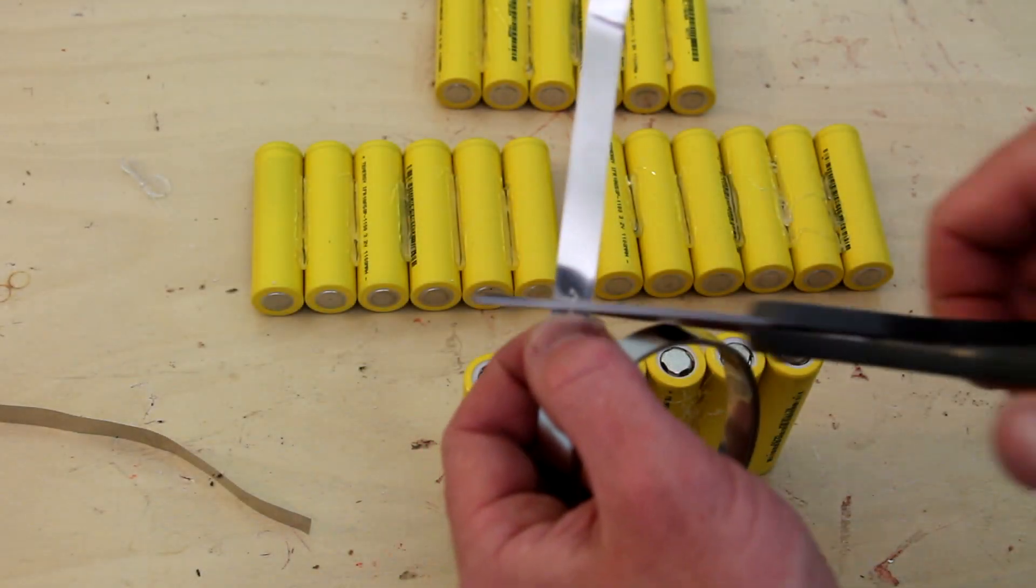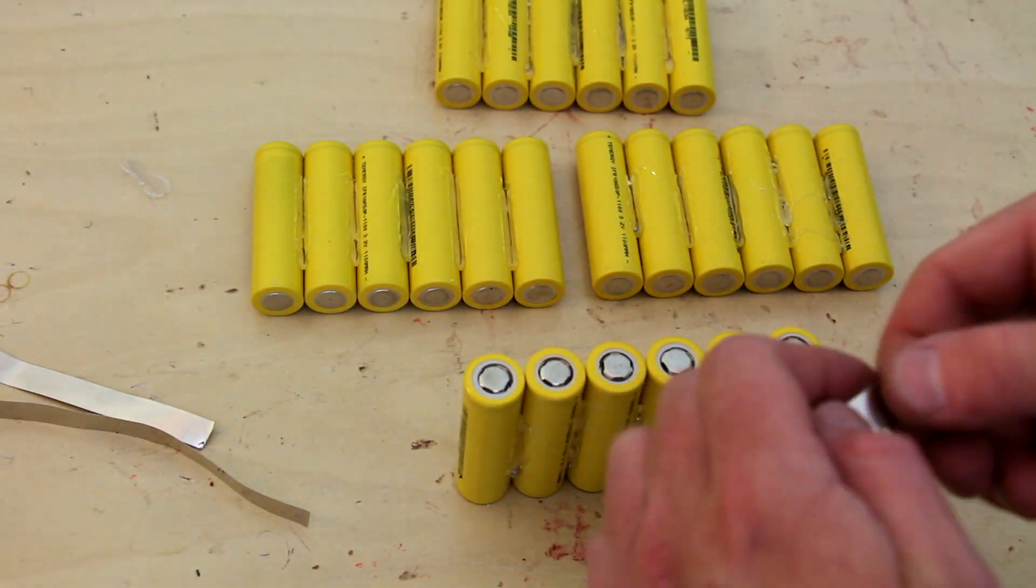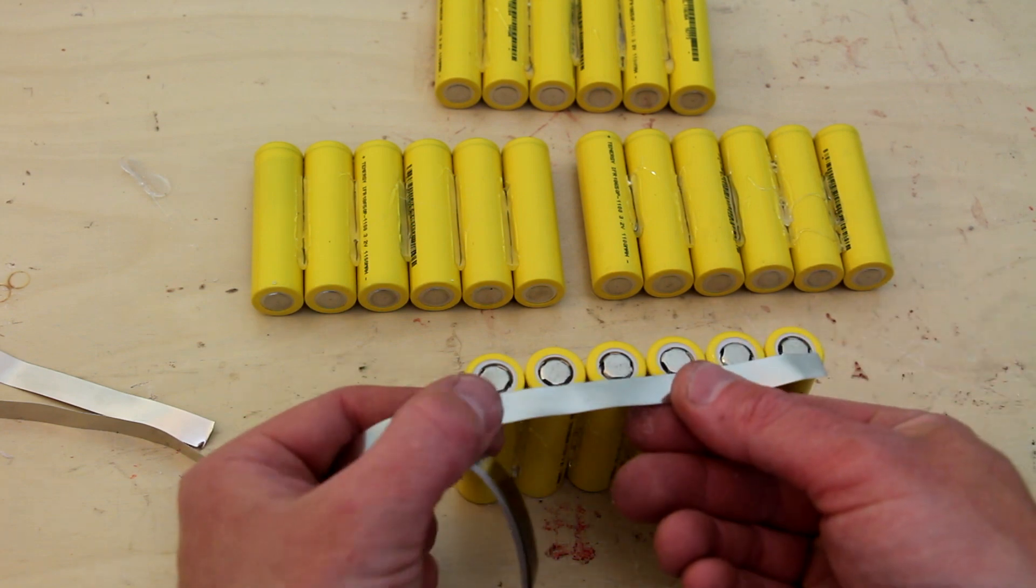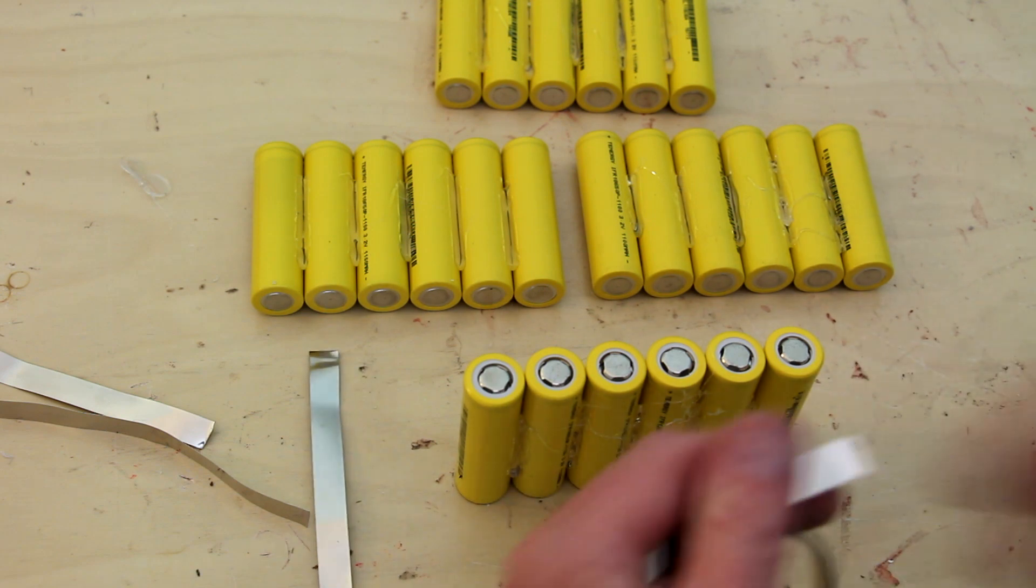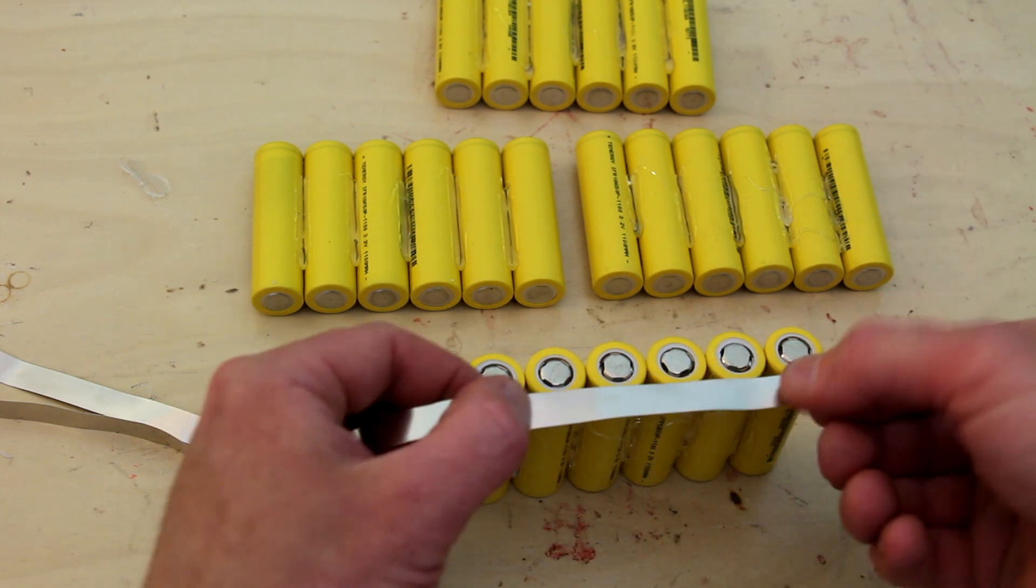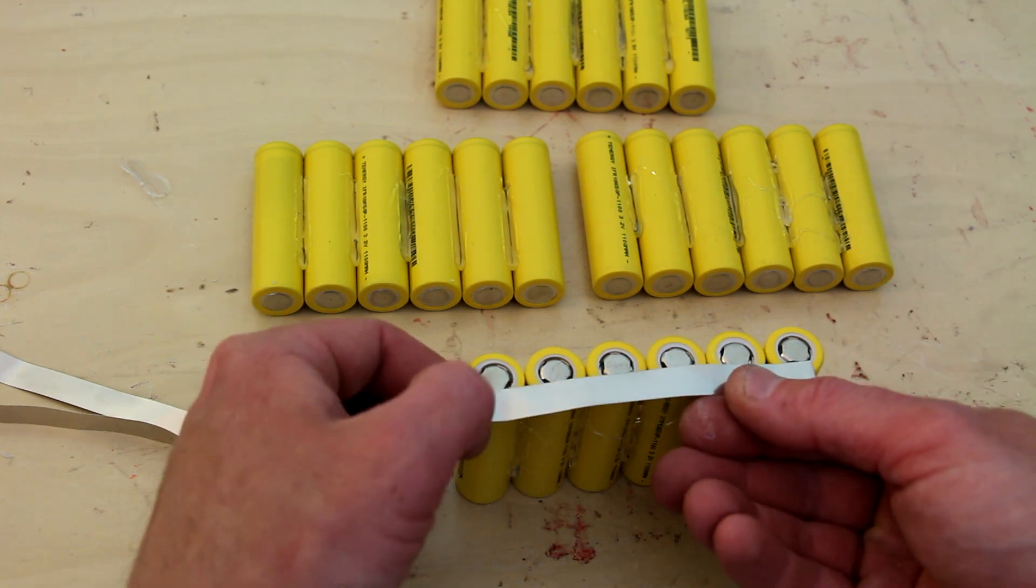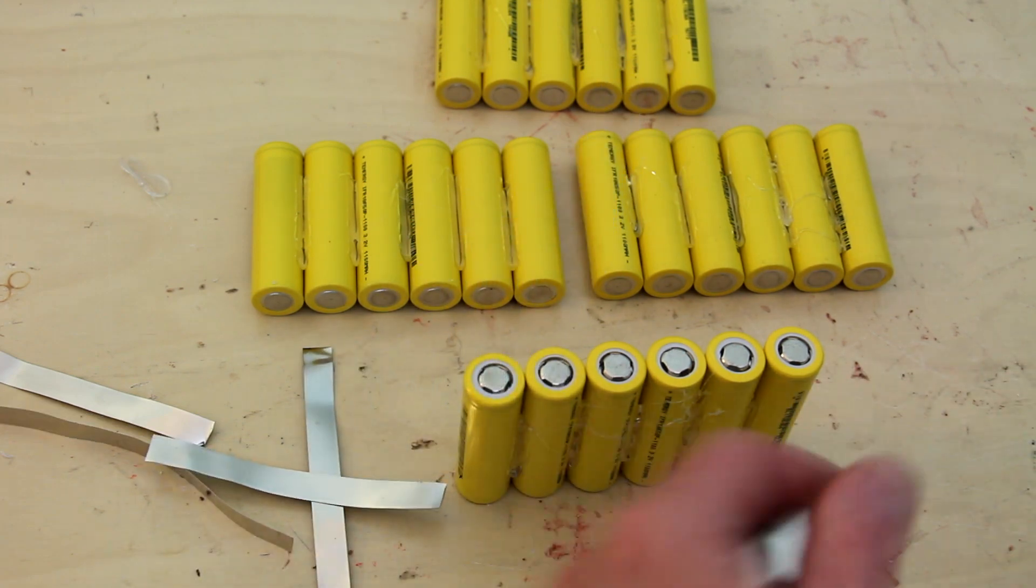To electrically connect the cells I'm going to use a nickel strip. You can find these all over the place from lithium wholesalers as well as eBay and they're all pretty much the same. Just measure them out so they go across all six cells and they can be cut by something as simple as scissors or a pair of diagonals if you prefer.